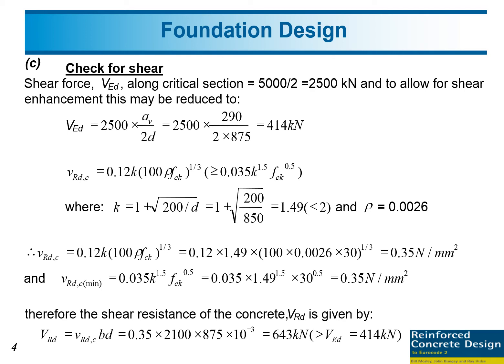VRDC is the shear strength of the concrete without reinforcement by using this equation, where K is 1 plus square root of 200 divided by D. From this we have K equals 1.49, less than 2, and then rho is the steel ratio of the pile cap.